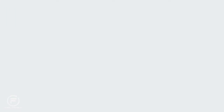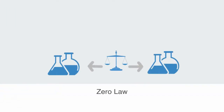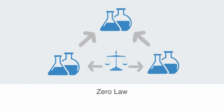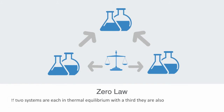This condition of equilibrium is enshrined in the zeroth law of thermodynamics, which states that if two systems are each in thermodynamic equilibrium with a third, they are also in thermodynamic equilibrium with each other. The zeroth law is clearly a statement of equilibrium, and it is through this equilibrium that we define the measurement of temperature as that which ceases to flow between systems in thermal contact.